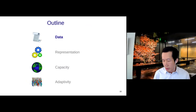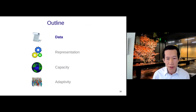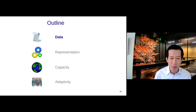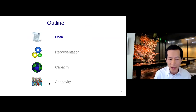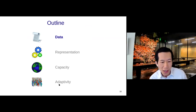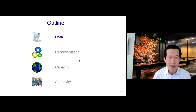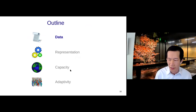In the remainder of the talk, I want to highlight three challenges — data, representation, and capacity — which are necessary to make a semantic parser effective. And finally I want to talk about adaptivity, which is a new paradigm I think can address these three issues in a clever way. Let's start with data.